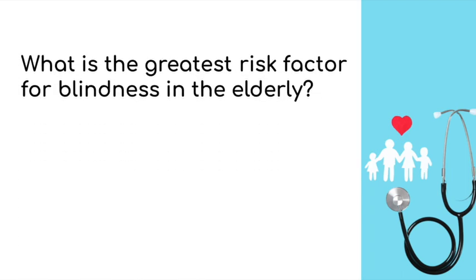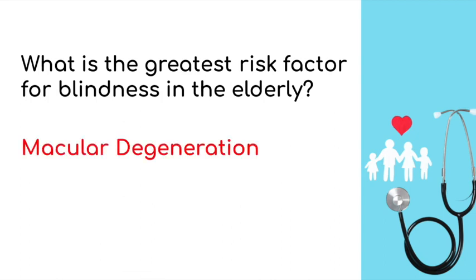What is the greatest risk factor for blindness in the elderly? Macular degeneration. This is also the most common cause of vision loss in the developing world. Macular degeneration has two types: wet and dry. The dry type is more common and can be treated with vitamins like vitamin C and vitamin E. The wet type is more progressive and is treated with drugs like bevacizumab. If you see a clinical vignette with central scotomas, wavy straight lines, or mentions of neovascularization, highly suspect age-related macular degeneration.